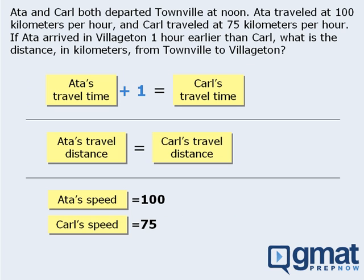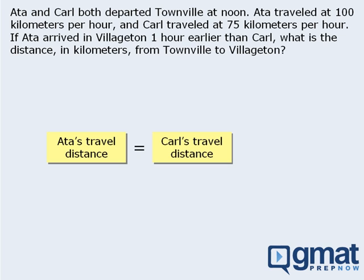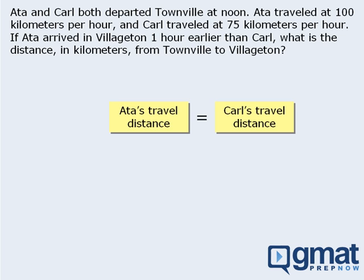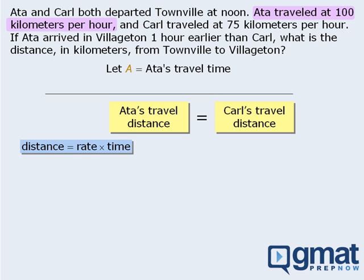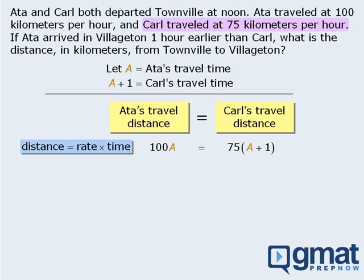Now let's return to our word equations and solve the same question using the word equation that says Ada's distance equals Carl's distance. To transform this into an equation with algebraic expressions, we will use the fact that distance equals the product of speed and time. We know Ada's speed, but we don't know her travel time, so let's let A equal Ada's travel time. Since Ada arrived one hour before Carl, Carl's travel time is A plus 1. Ada's distance equals her speed of 100 km/h times her travel time A. Carl's distance equals his speed of 75 km/h times his travel time of A plus 1 hours.